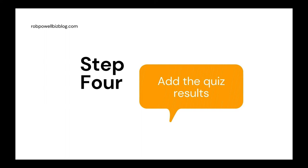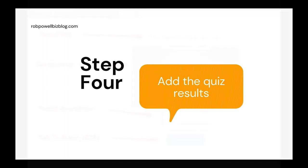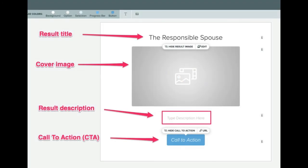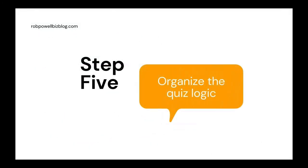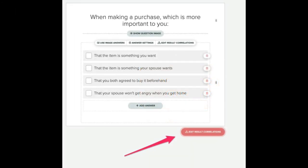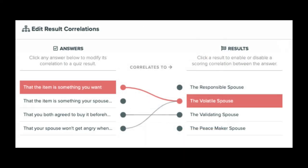Step four: add the quiz results. Be aware that the more positive your results sound, the more likely it is that people will share their quiz results on social media. Make sure to add an image that sums up the result, and if you can make it humorous, so much the better. You can also add a call to action — this might be a link to a relevant article on your website, or a link to a product or service related to the result your quiz taker got. Step five: organize the quiz logic. This involves matching answers to results. Go back to your questions and click on the Edit Result Correlations button. This is where you associate each answer with one or other of the results. Click on the answer and then click on the result you want to match it to. You don't have to match every answer to a result, and you can match more than one answer to a single result.